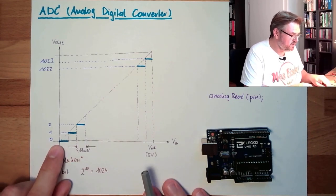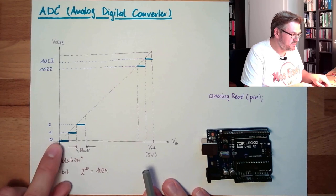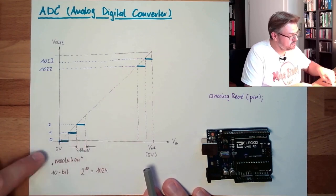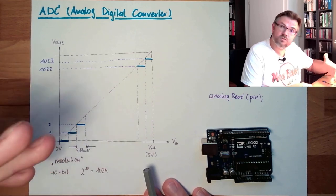So each class is a precise broad of 4.88 millivolts. In the first 4.88 millivolts, we are getting zero. Then from 4.88 to 9 dot, we have one. And so on.